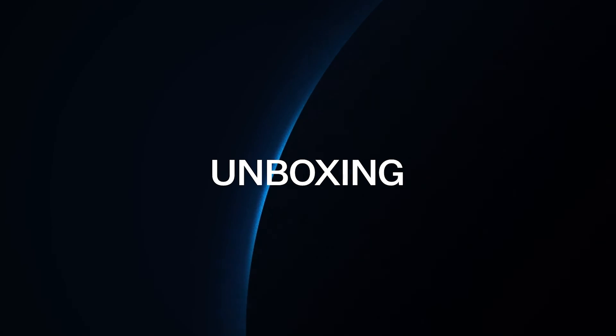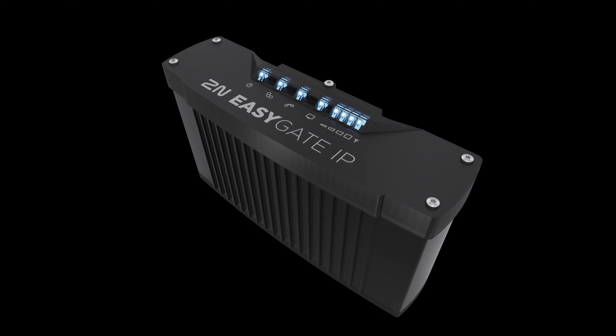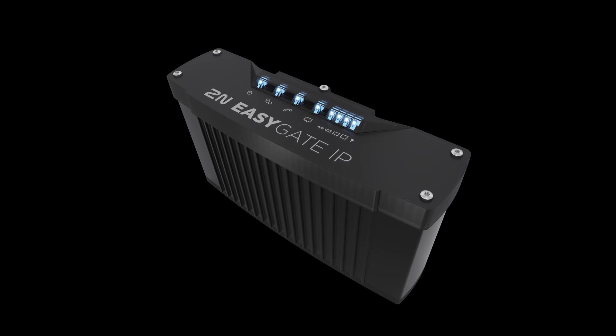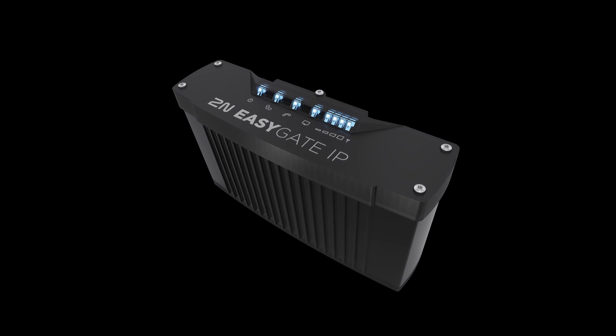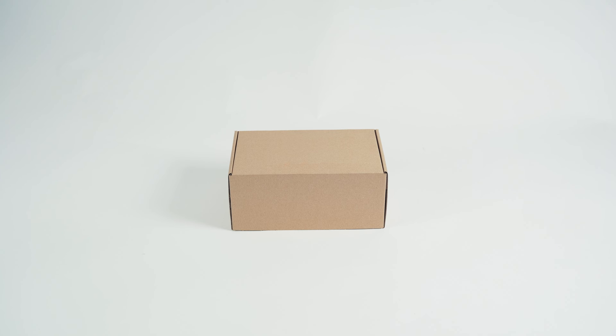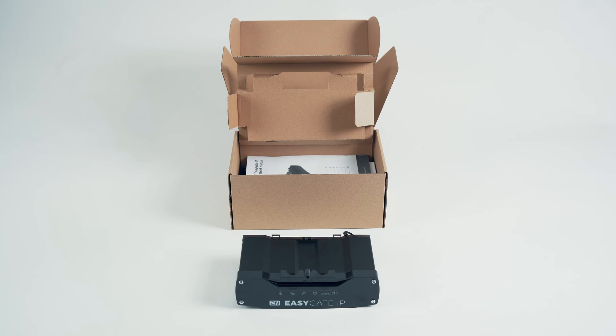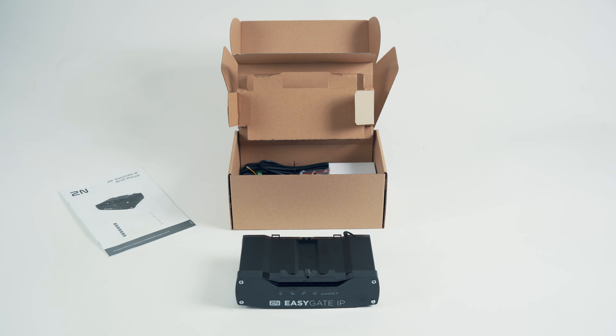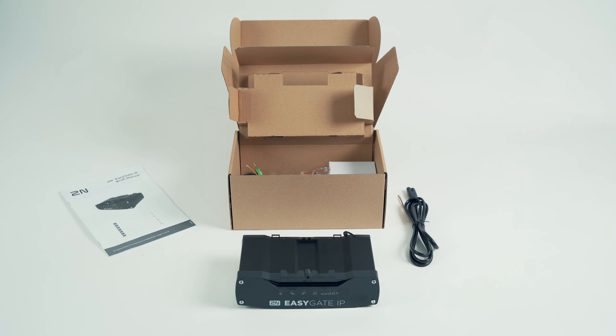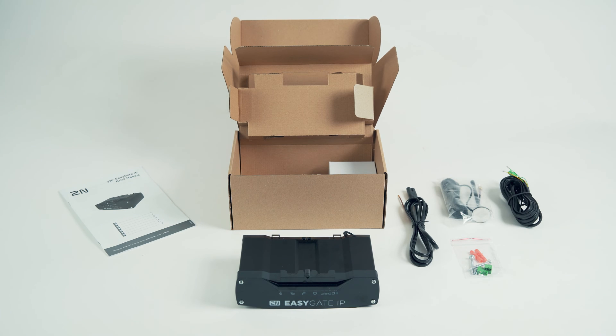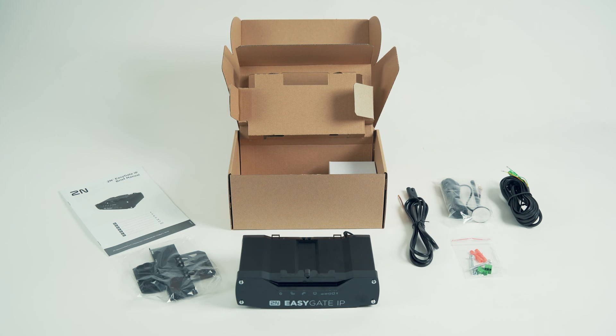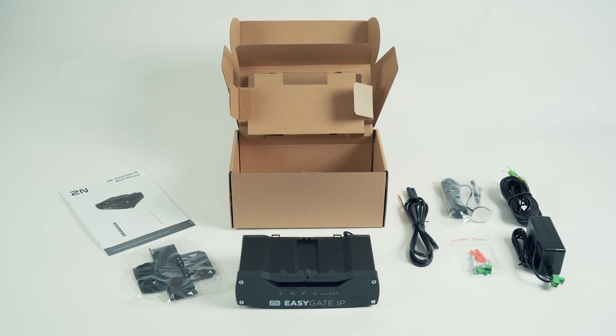Let's unbox the products. This is the standard generic version of the 2N EasyGate IP. The package includes the product itself, a brief manual, a power supply cable, wall plugs, screws and terminal blocks, an antenna with a 3-meter cable, a 5.5-meter FXS cable, a bracket, and a power supply adapter.